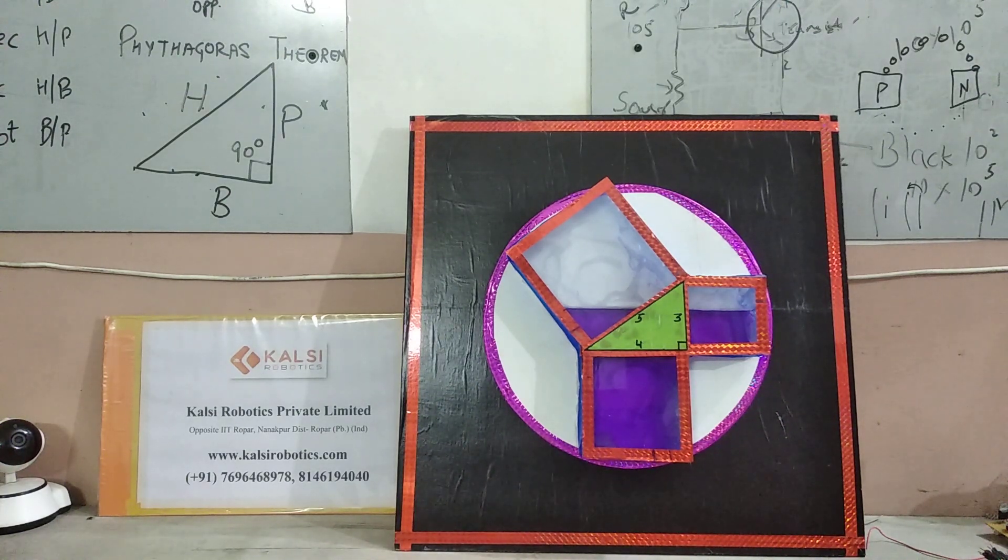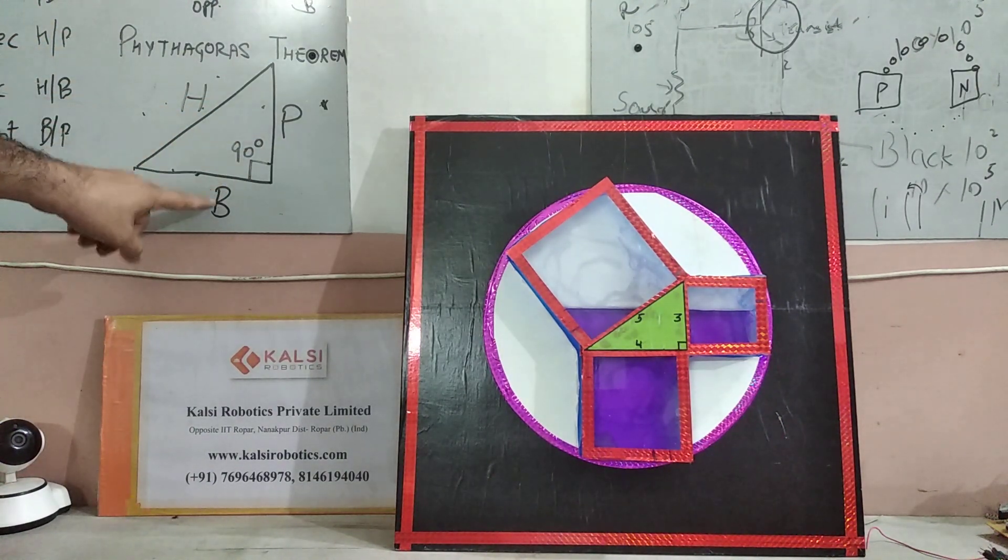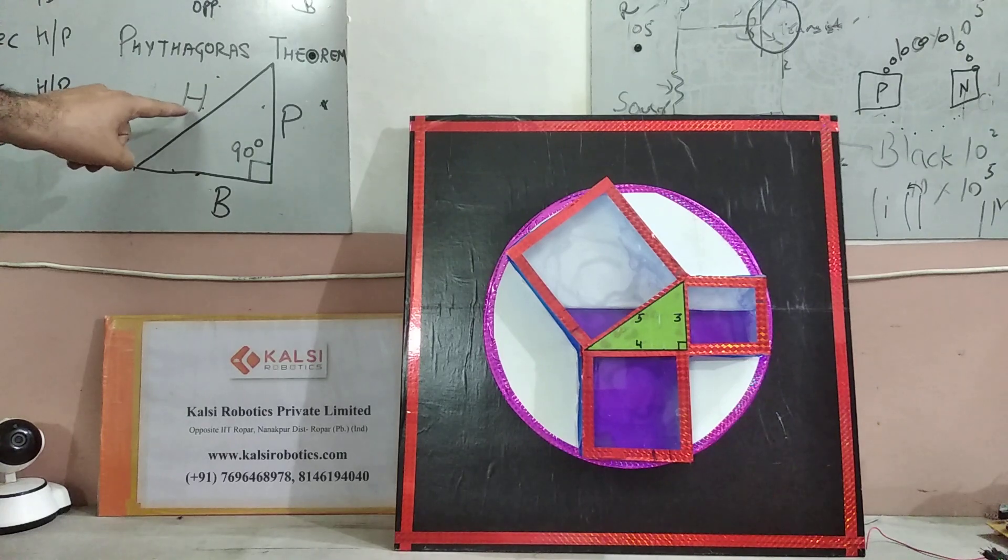Hello everyone, this is a new project about Pythagoras theorem. This is the perpendicular, here we have a 90 degree angle with the base, this is the hypotenuse.